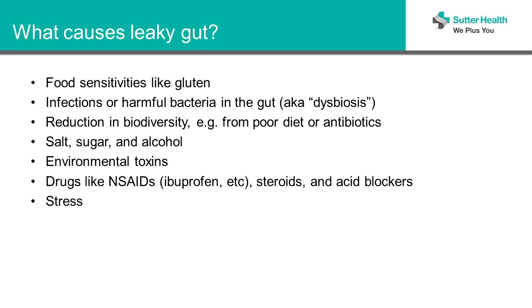If we have infections or harmful bacteria, that can lead to gut permeability. If we don't have that biodiversity, those organisms keep themselves in check and help to keep everything in balance. Salt, sugar, and alcohol — excessive salt, we think, can cause changes in gut permeability. Environmental toxins, drugs, and stress — there are a lot of things we think are converging to create these changes.